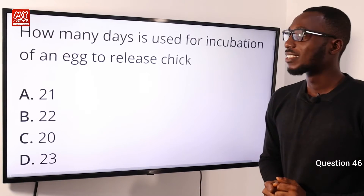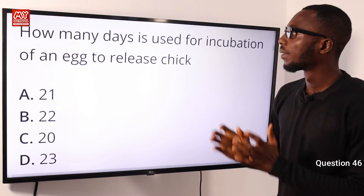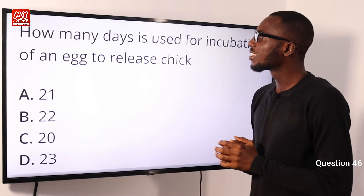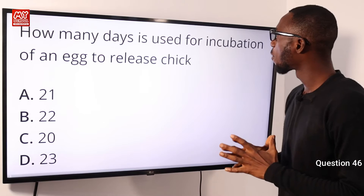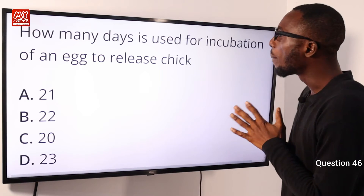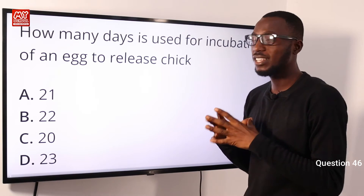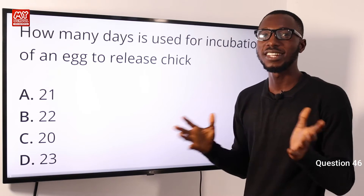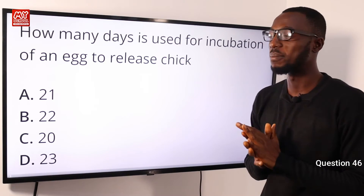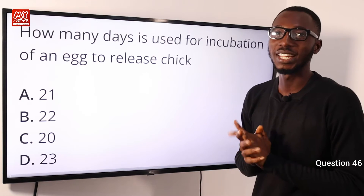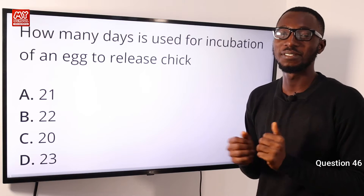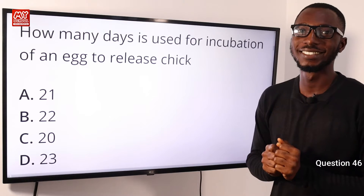Number 46: How many days is used for incubation of an egg to release a chick? This just takes 21 days. So option A is very correct.